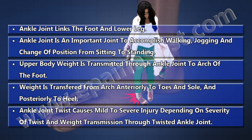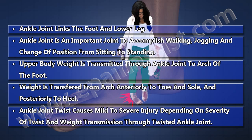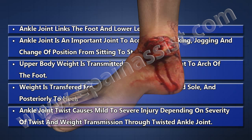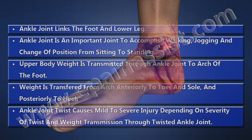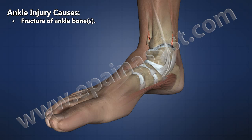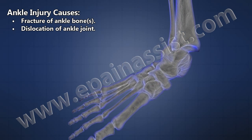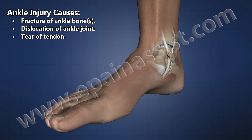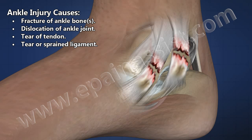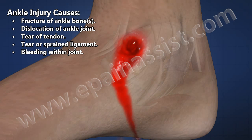Ankle joint twist causes mild to severe injury depending on severity of twist and wave transmission through the twisted ankle joint. Ankle injury causes fracture of ankle bone, dislocation of ankle joint, tear of tendon, tear of sprained ligament, and bleeding within the joint.